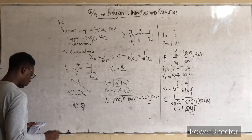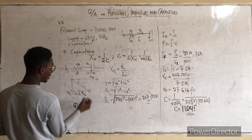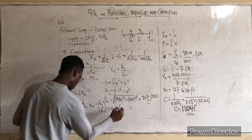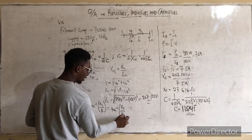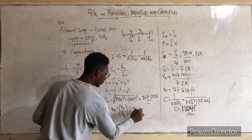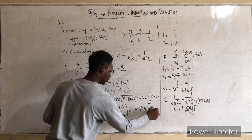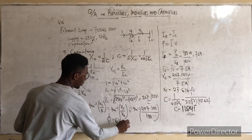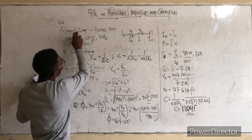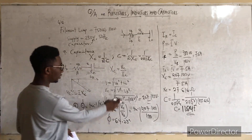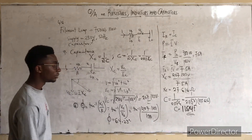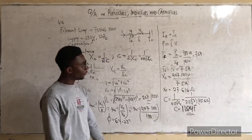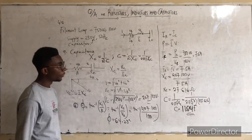For the phase angle, since this is a series RC connection, the phase angle φ = tan⁻¹(XC / R) = tan⁻¹(VC / VR) = tan⁻¹(207.123 / 100), which gives 64.23 degrees. That is the phase angle between the current and the applied voltage. Please send any further questions to the email provided. Have a good night.